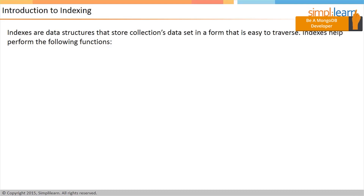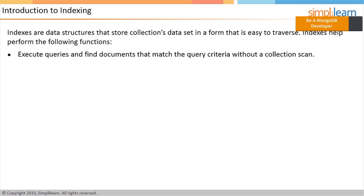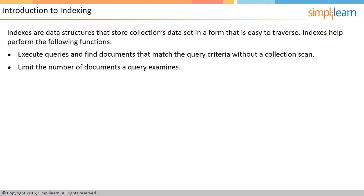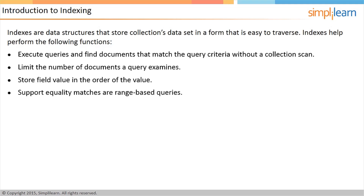Typically, indexes are data structures that can store collections of data in a form that is easy to traverse. Queries are efficiently executed with the help of indexes in MongoDB. Indexes help MongoDB find documents that match the query criteria without performing a collection scan. If a query has an appropriate index, MongoDB uses the index and limits the number of documents it examines. Indexes store field values in the order of the value, supporting operations such as equality matches and range-based queries. MongoDB sorts and returns results using the sequential order of the indexes.